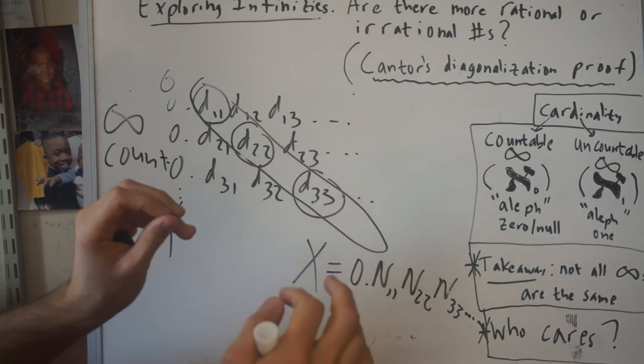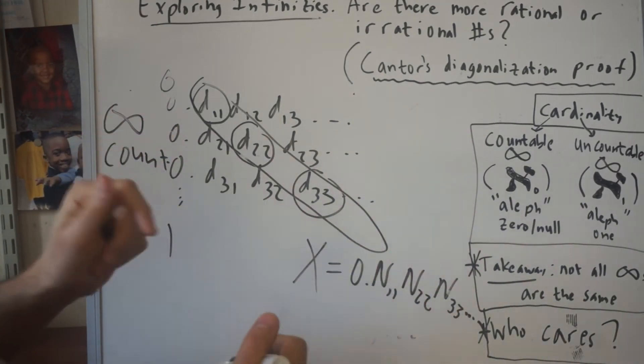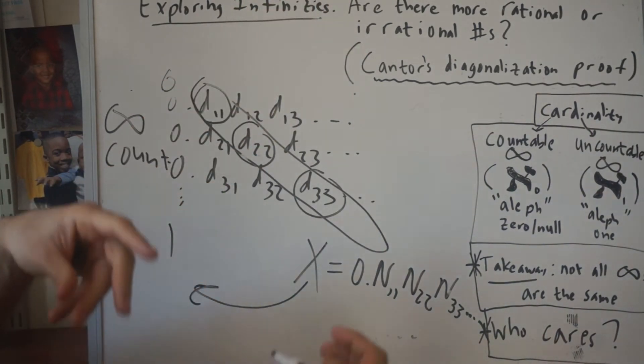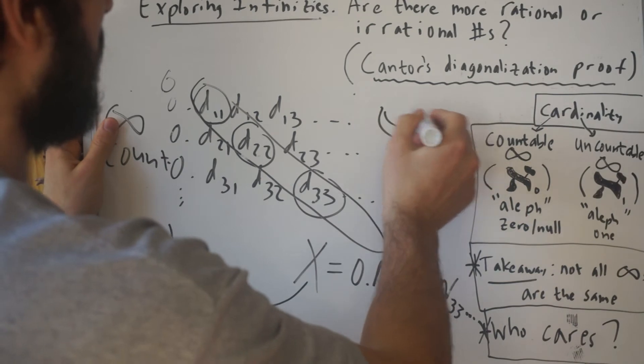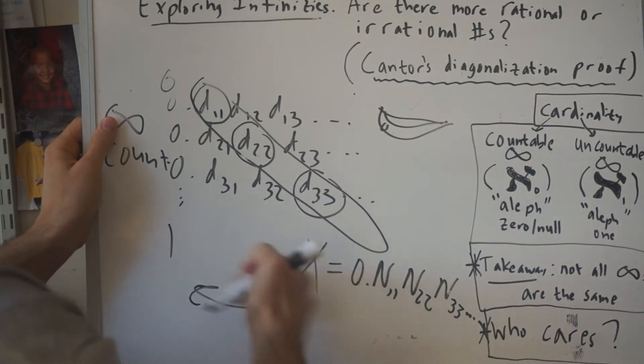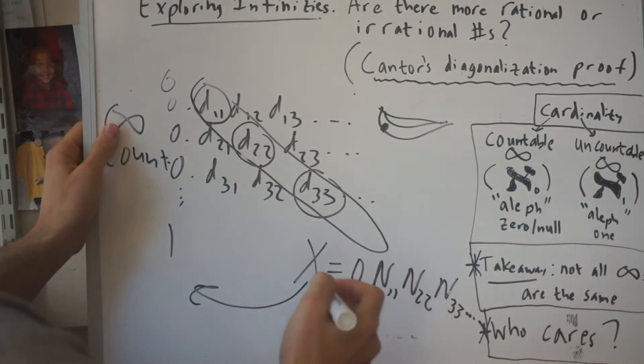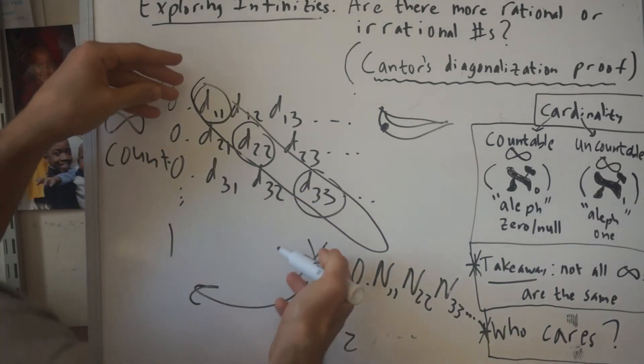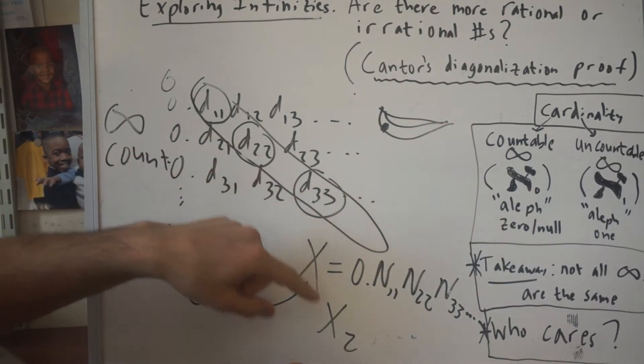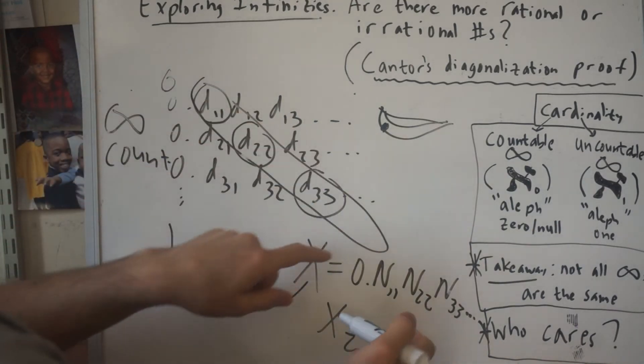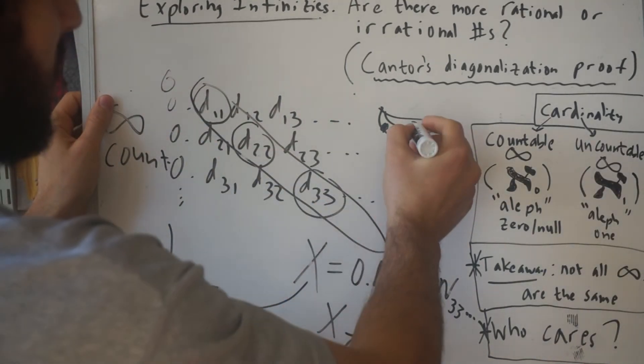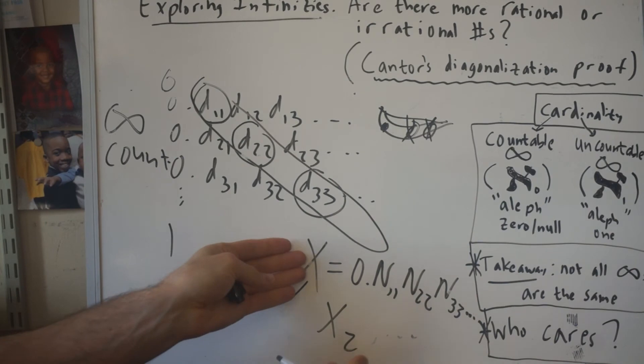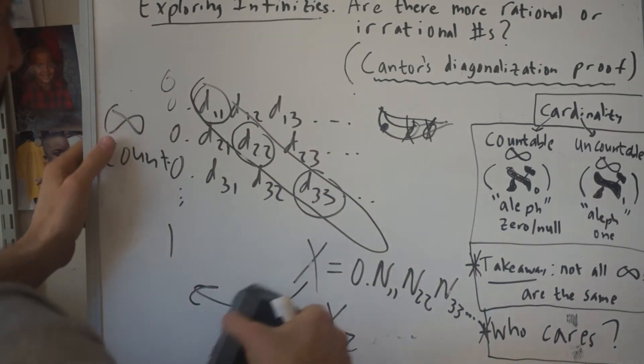You might be thinking, okay, so we missed one number, who cares? Let's just tack this on to our list and now we've got everything. Well, I'm just going to keep doing this. Think of it like a leaky boat. This is a leak, right? If we add this to the list, we've patched up the leak, but I'm going to create a second number the same way. Let's say this is number five million. Now this is going to differ in the five millionth digit on that diagonal from that number. So we've created a new leak. If you try to patch a leak, we're just going to create a new leak every time. You can create an infinite amount of these weird numbers that are not in your list just by doing this over and over.